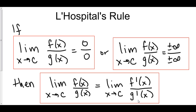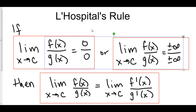Basically, if you take a limit and on top and bottom you have 0 over 0 or infinity over infinity — it can't be 0 over infinity, it has to be the same thing both on top and on the bottom. That's one of our restrictions. So 0 over 0 or infinity over infinity, just take the derivative and try to take the limit again. Keep doing this as many times as you need to.